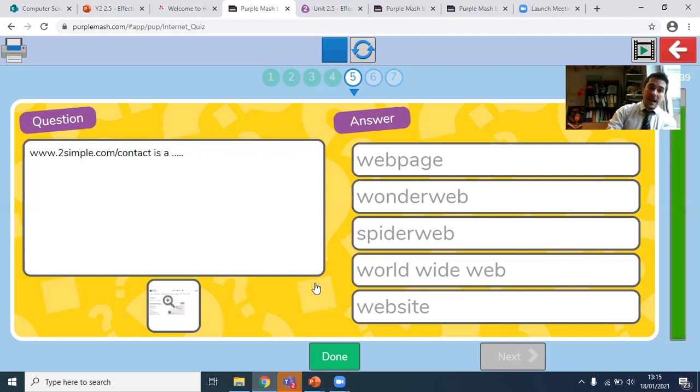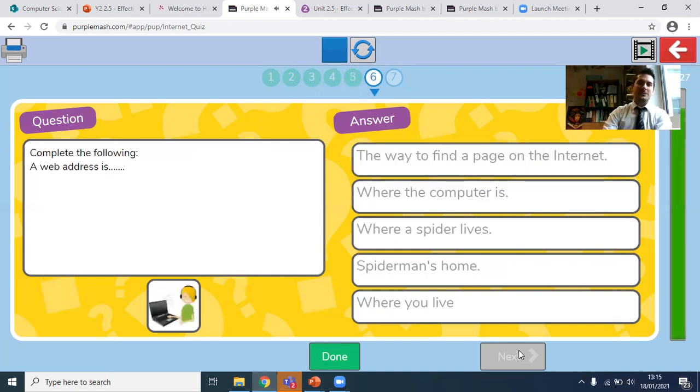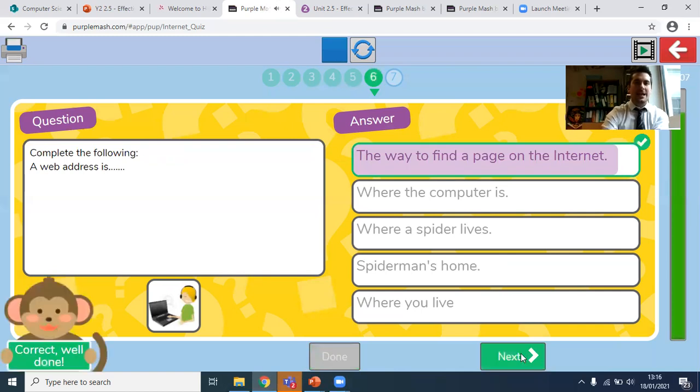Now, www.twosimple.com slash contact is within the twosimple.com website. It is a web page. Next one here, complete the following. A web address is the way to find a page on the internet. First one, of course, I hope that no one thought that a web address is where Spider-Man lives. I'm sure you were more sensible than that.